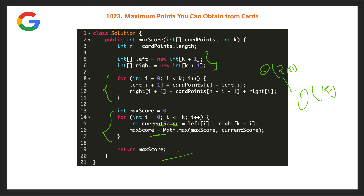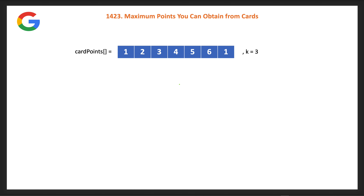If you submit this, it gets accepted. But in an interview, the interviewer will ask a follow-up: can you further optimize the space complexity? We can't improve the time complexity below O(k), but we can try to achieve O(1) constant space.